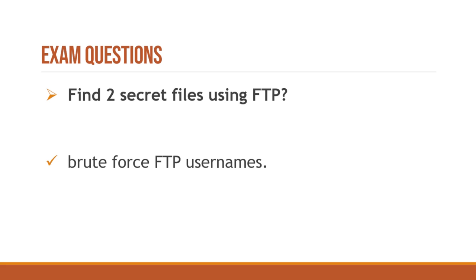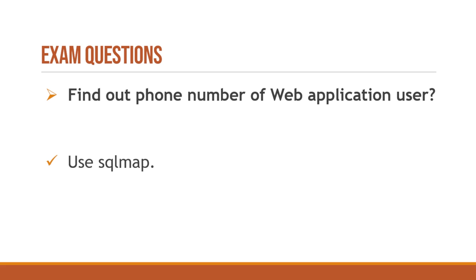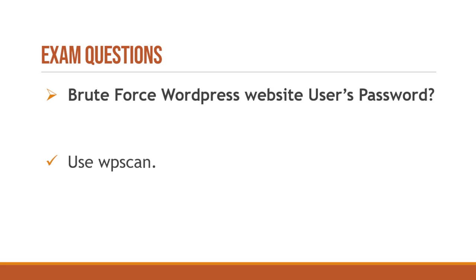To find the two secret files inside FTP, the solution is to brute force the FTP usernames and passwords — all the wordlists are already on your machine, so you just execute the brute force. Another question: find the phone number of a web application user. This web application has a SQL database containing user details including a phone number, so you use SQLMap to get access to the database and retrieve the phone number.